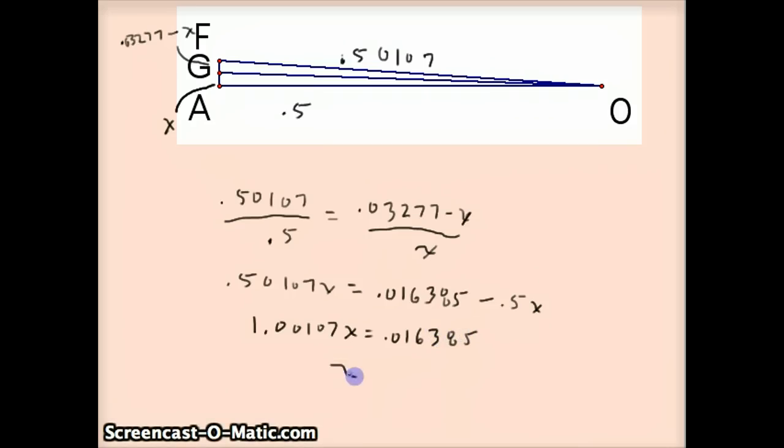And when you divide both sides by that 1.00107, you're going to get our value of X, which is AG is approximately 0.01637. Now, this is one half of one side of the 96-gon, so I'm going to multiply that through by 192 and get 3.14271, which is where Archimedes is going to stop.